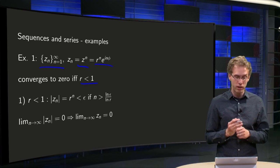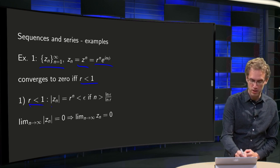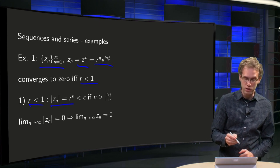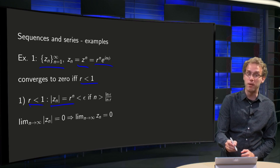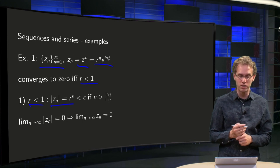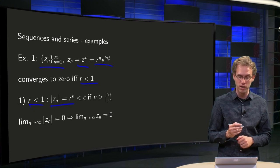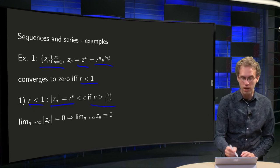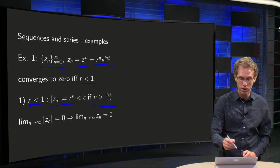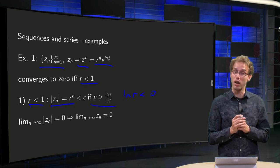Why is that? If r is smaller than 1, the norm of z_n equals r to the power n, and this is smaller than ε provided we take n big enough. Taking the logarithm on both sides, we get n times ln(r) has to be smaller than ln(ε). Dividing by ln(r) — which is negative since r < 1 — we get n bigger than ln(ε) divided by ln(r).